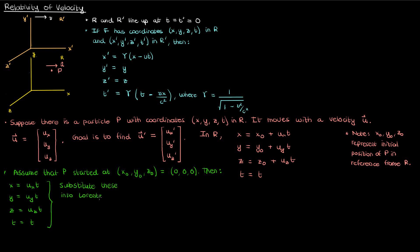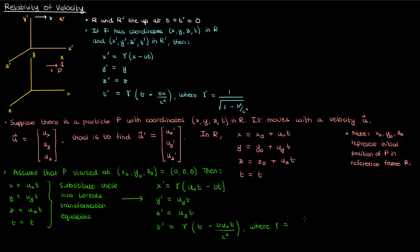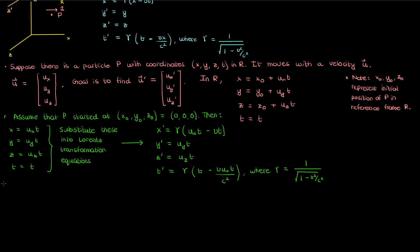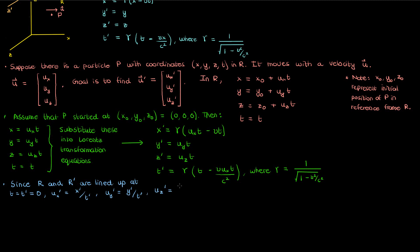Now what we're going to do is take our coordinates of p and substitute them into the Lorentz transformation equations to get the primed coordinates of p in terms of the velocity components in the unprimed reference frame. Our goal is to find the primed velocities — the velocity components of particle p in the primed reference frame. Since both reference frames are lined up perfectly at time 0 and the clocks are synchronized at time 0, the velocity of p in the primed reference frame is just the corresponding primed coordinate divided by the time elapsed in the primed reference frame t'. So if we replace t in the x', y', and z' equations with t', we'll find the velocity components of p in the primed reference frame.